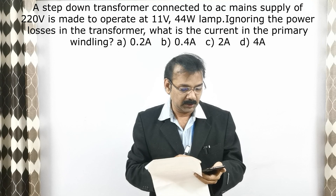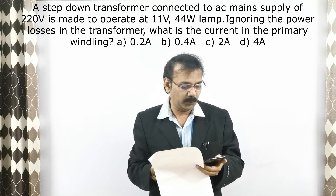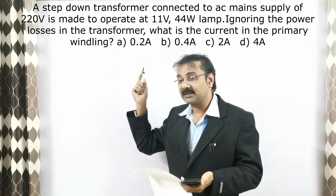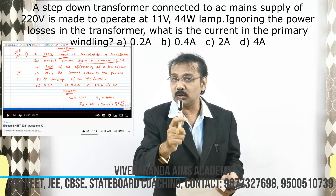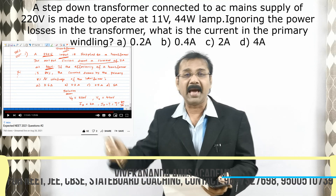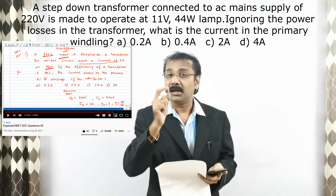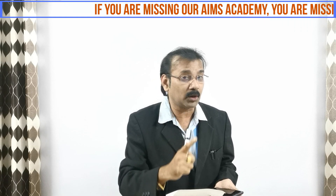A 44-watt lamp — ignoring power losses in the transformer — what is the current in the primary? The four options are 0.2 ampere, 0.4 ampere, 2 ampere, and 4 ampere. I have given the link to my live session video just below the question. If you had studied my channel questions, you would have got 36 marks.